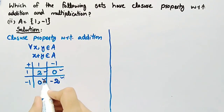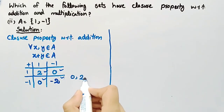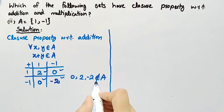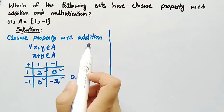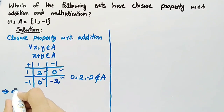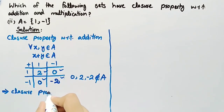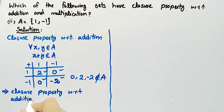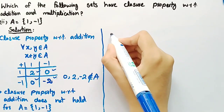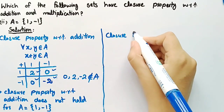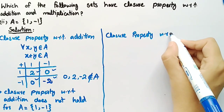By observing all sums we can clearly see that 0, 2, and -2 do not belong to set A. This means that set A does not satisfy the definition of closure property with respect to addition, which implies that closure property with respect to addition does not hold for set A = {1, -1}.